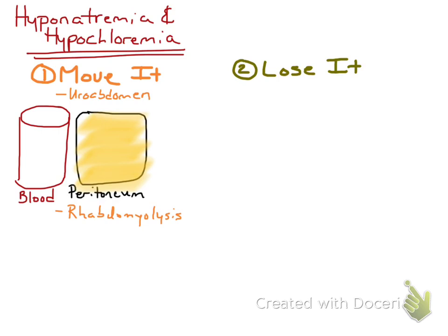That urine contains higher concentrations of certain things compared to the blood. Everything that the kidney excretes — urea, creatinine, phosphorus, and potassium — all of those substances are at higher concentrations in urine compared to blood. When those substances end up within the peritoneal cavity, they move down their concentration gradient and diffuse into the blood, so you'll see higher concentrations of those substances in blood. The urine also contains a lower concentration of sodium and chloride relative to blood, because the kidneys resorb and conserve sodium and chloride. So sodium and chloride move down their concentration gradient with uroabdomen and decrease in blood.